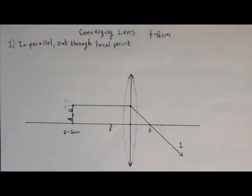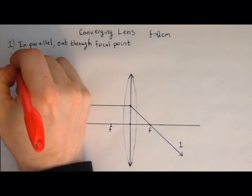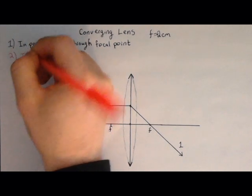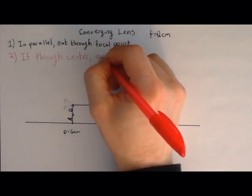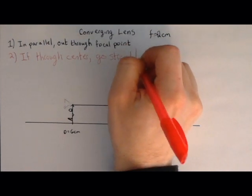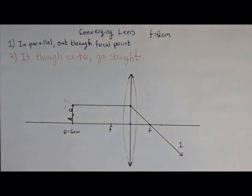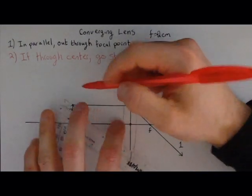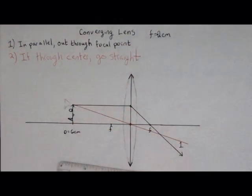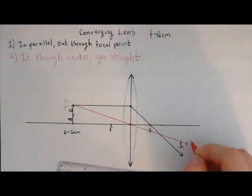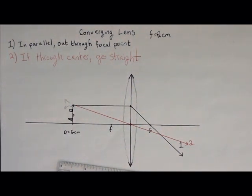You'll notice we're pretending that all the bending happens here at the center of the lens. That's due to the thin lens approximation that was discussed in the previous chapter. The second ray is if through the center, go straight. Now, in the case of a lens, the center is here where the lens meets the optical axis. Remember, the optical axis, by definition, goes through the middle. It may not look like it because I'm not much of an artist, but it's okay. So there, that is ray number two. Go straight through the middle.